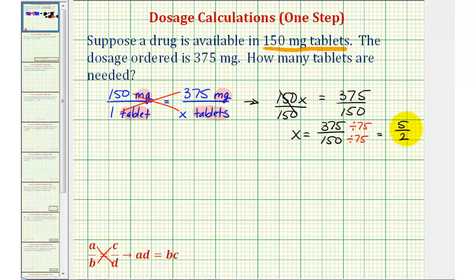So we have X equals 5 halves, but let's also write this as a mixed number and a decimal. To do this, we'll perform this division. Remember, a fraction bar means division.